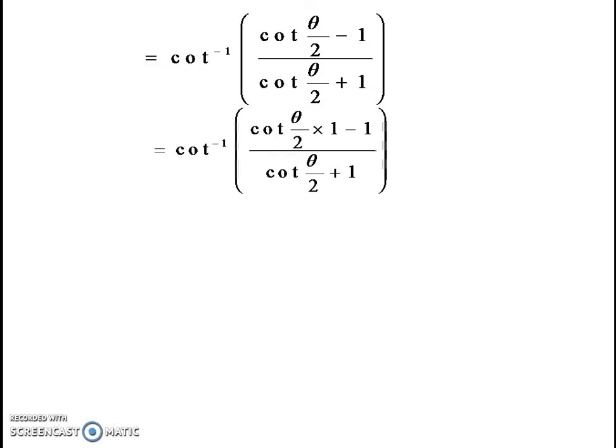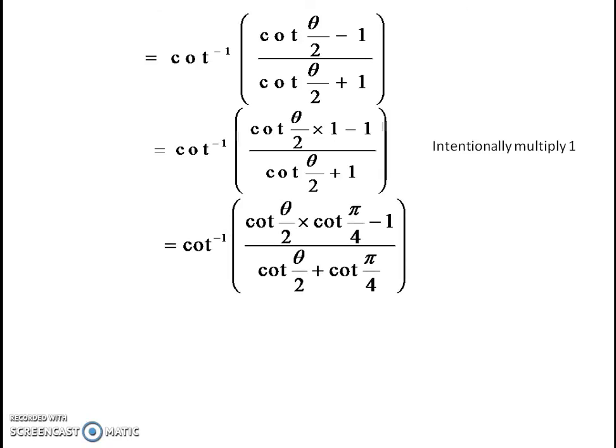Intentionally multiplying 1 in the numerator as cot pi by 4, the expression becomes cot inverse of cot theta by 2 times cot pi by 4 minus 1 over cot theta by 2 plus cot pi by 4. Using the identity cot a times cot b minus 1 over cot a plus cot b equals cot of a plus b, the final answer is cot inverse cot of theta by 2 plus pi by 4, which simplifies to theta by 2 plus pi by 4.